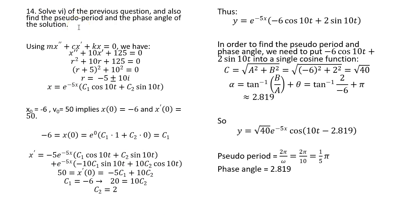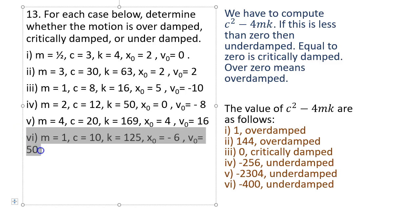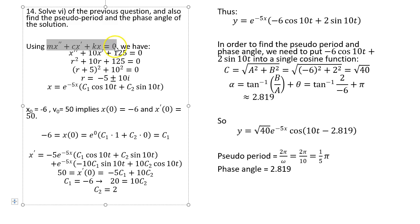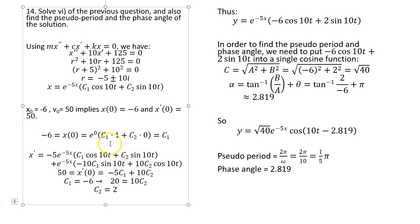Now solve item 6 from the previous question and find the pseudo-period and phase angle. Item 6 has m=1, c=10, k=125. The master equation for mechanical vibration is mx'' + cx' + kx = 0 with no external force. Write the characteristic equation, solve it using completing the square or the quadratic formula, and write down the general complementary solution.